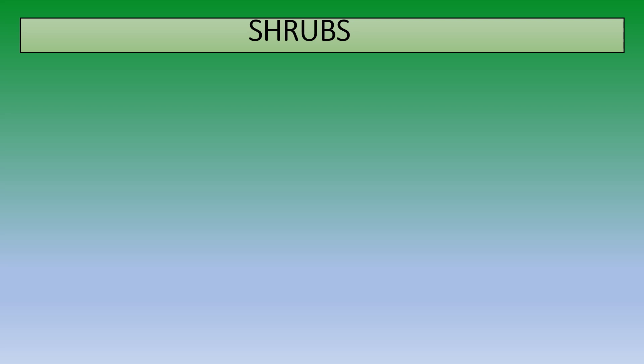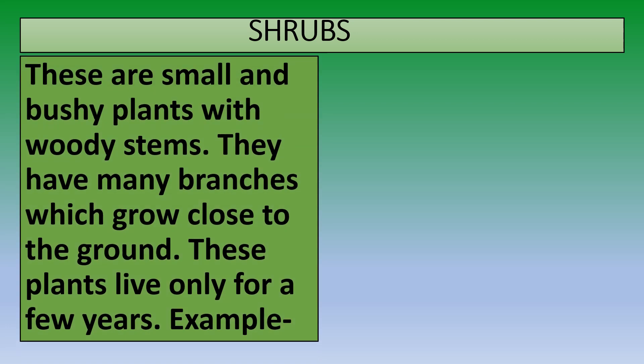Let's start with shrubs. What are shrubs and how do they look? These are small and bushy plants with woody stems. They have many branches which grow close to the ground.